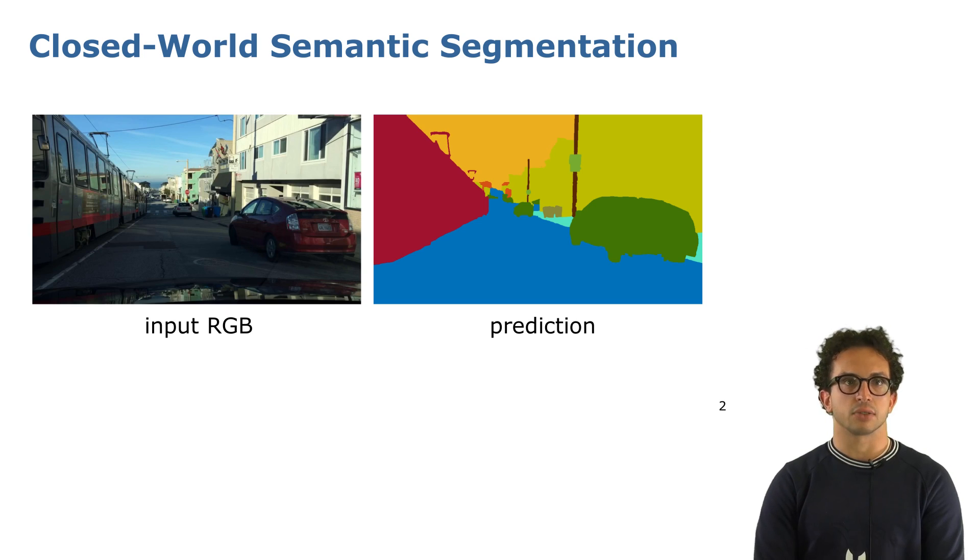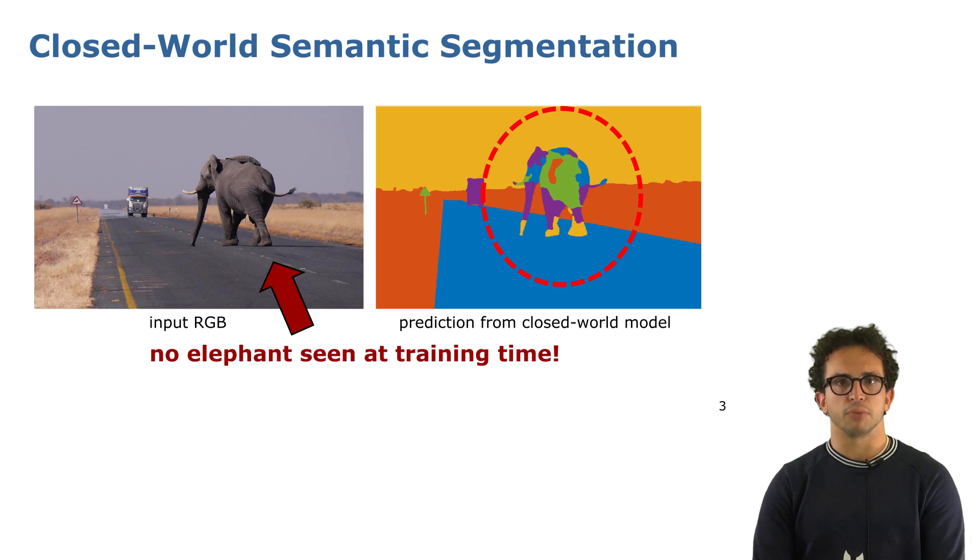Standard vision systems tackle a task called closed-world semantic segmentation, which is pixel-wise categorization of the scene into known classes. Problems with this arise when a novel class and novel object enters the game.